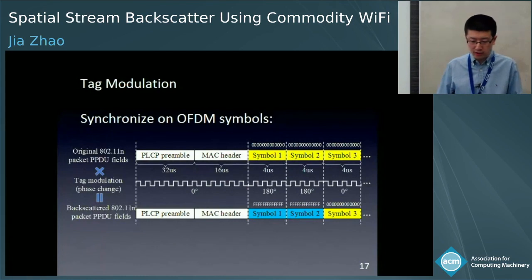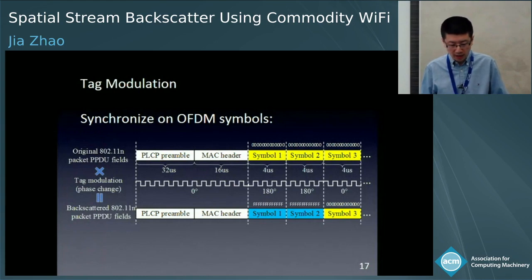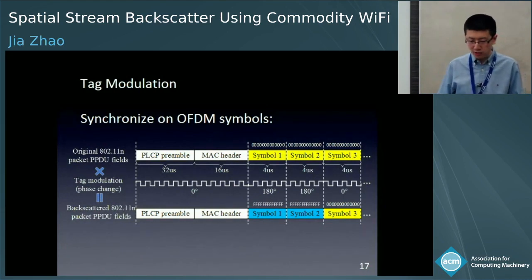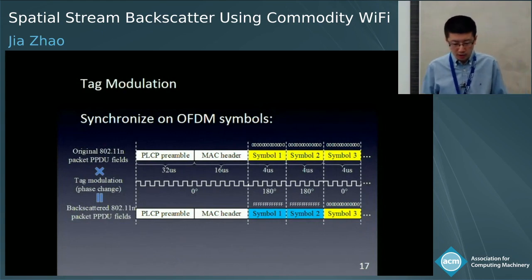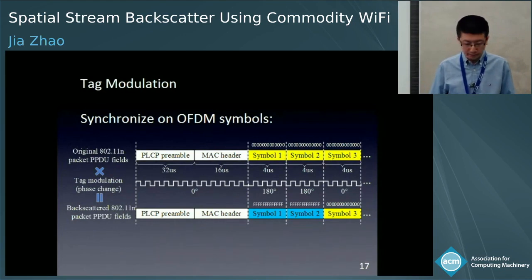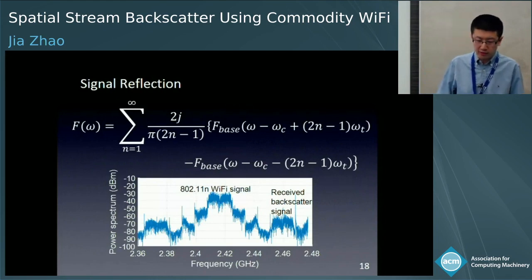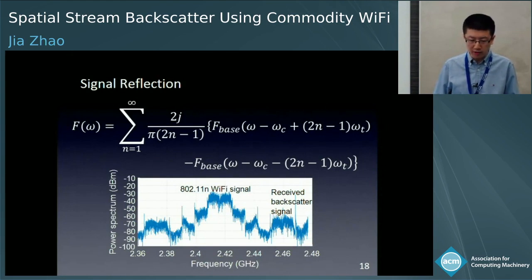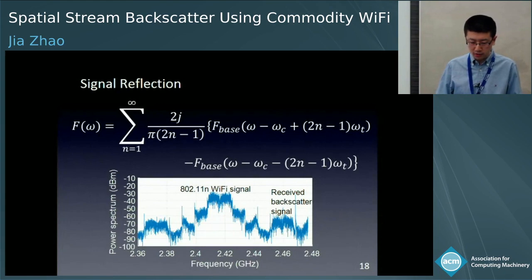The synchronization follows duration fields defined in the standard 802.11 Wi-Fi packet format. The phase change operates on individual OFDM symbols for a single-stream packet, and it operates on the whole PPDU data fields for a multi-stream packet. The spatial stream signal is reflected using an RF switch and a 50 MHz on-off control signal. From the frequency spectrum, we can see that the backscatter signal is 50 MHz away from the original Wi-Fi signal.